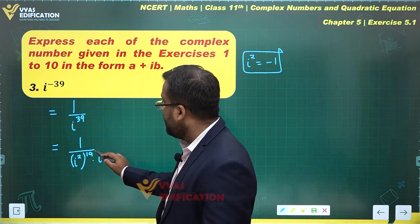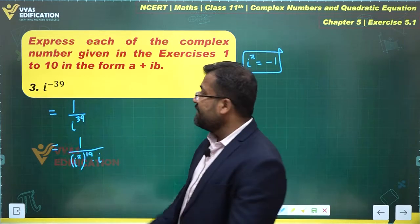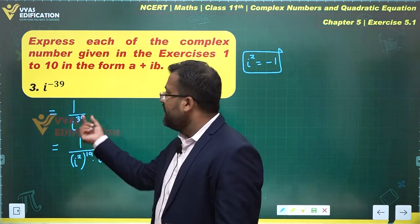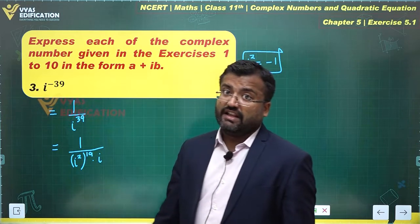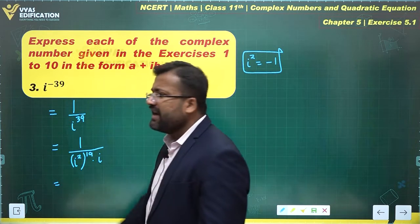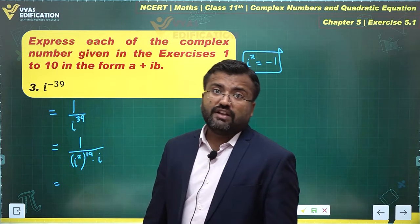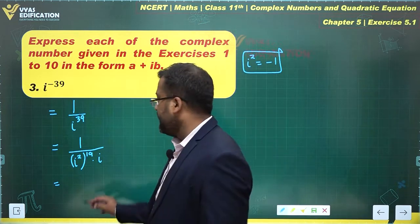39 can be split as 38 plus 1, and 38 can be expressed as i squared power 19. i squared is minus 1, so we get minus 1 to the power 19. Minus 1 power odd number, what will that be? That will be simply a minus.